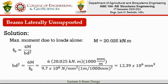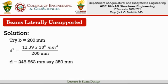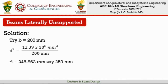The weight of the beam is a dead load source. For now, we design the beam dimensions for the applied load alone. Recalling the reduced bending stress formula for a rectangular section: f = 6M / (bd²), by substitution we find that bd² = 12.39 × 10⁶. Trying b = 200 mm, we calculate d = 248.863 mm, which we round up to 250 mm.